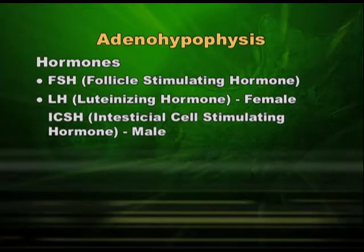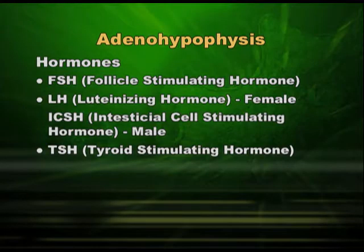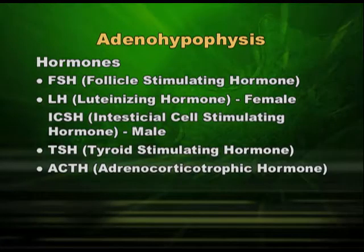The third hormone from the anterior pituitary is TSH, thyroid stimulating hormone, which acts on the thyroid and causes it to secrete thyroid hormones. The fourth is ACTH, adrenocorticotrophic hormone. This hormone from the anterior pituitary acts on the adrenal cortex, not on the adrenal medulla. The adrenal has an outer cortex and inner medulla; the medulla is part of the central nervous system, the cortex is part of the endocrine system. So ACTH acts on the cortex — hence the name adrenocorticotrophic hormone.